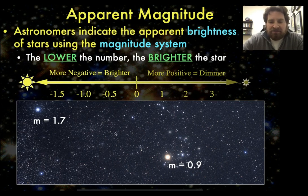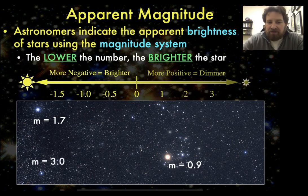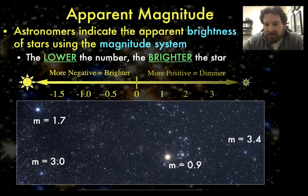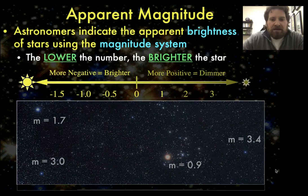Since every other star in the image is dimmer than the star with magnitude 1.7, the other stars must have magnitudes greater than 1.7. For example, this star at the lower left has a magnitude of 3. This star over here has a magnitude of 3.4, which means it's slightly dimmer. So that, in a nutshell, is how the magnitude system works.